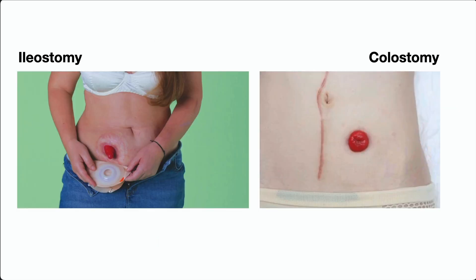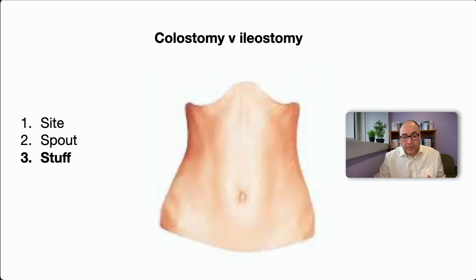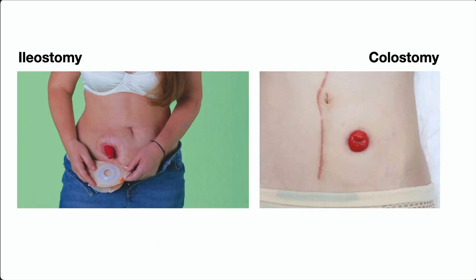The next major difference is the spout. In the case of an ileostomy, they are usually spouted — not flush with the skin, but proud of the skin. The reason relates to the third difference: stuff, the content of the bag. The content of an ileostomy bag is very noxious and toxic to the skin because it's further upstream in the alimentary canal — close to the stomach, with hydrochloric acid and pancreatic enzymes that are very corrosive. So the ileostomy is spouted so it acts as a tap, letting contents dribble into the bag. Whereas a colostomy is more flush with the skin, and its contents — though not pleasant — are semi-formed, semi-solid fecal matter, not as corrosive.